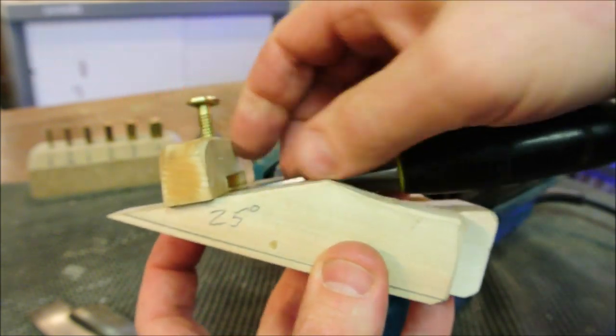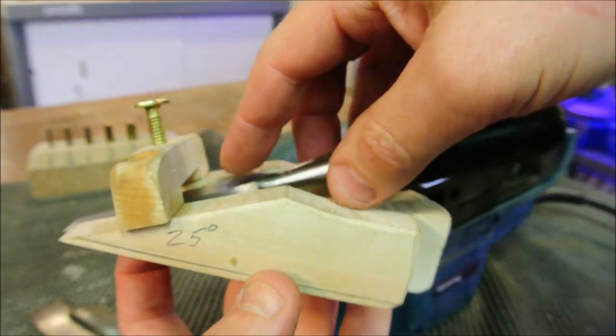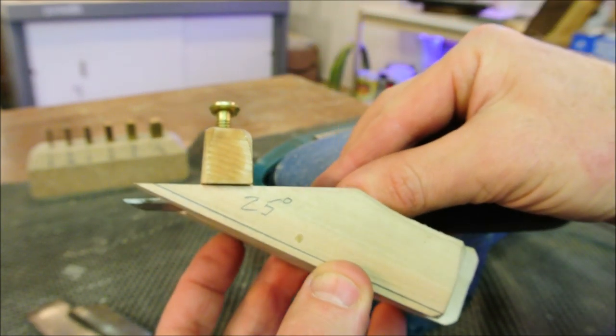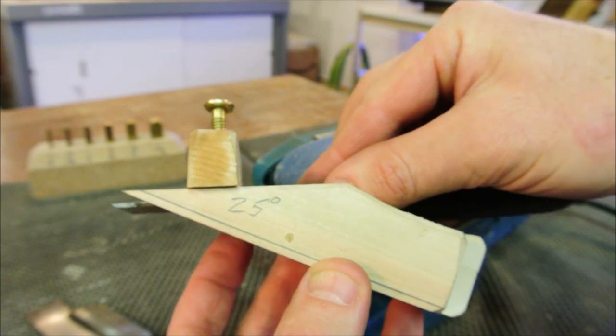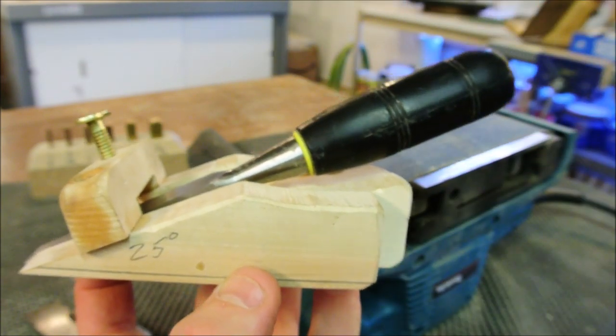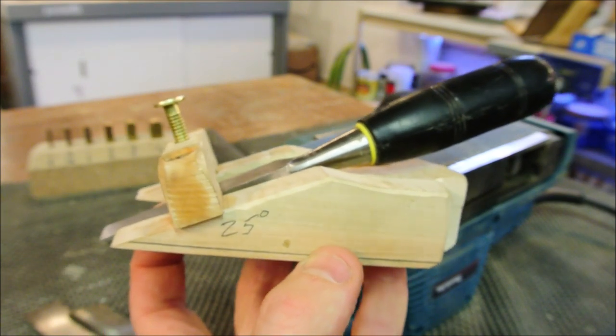So just as a general rule when you use something like this, you can put it in the jig, and as you go through your sanding, you can gradually move it back a little. Don't ever move it deeper into the jig, or else you'll get the opposite of a micro bevel, which will make a weaker edge.